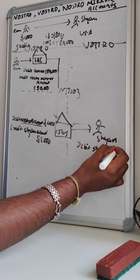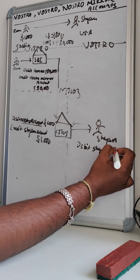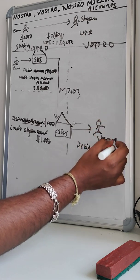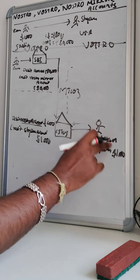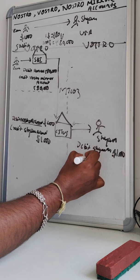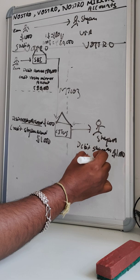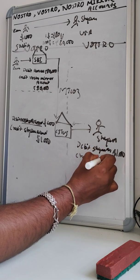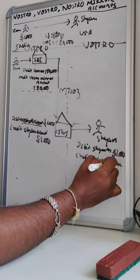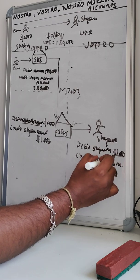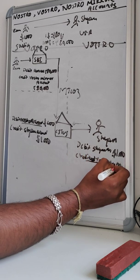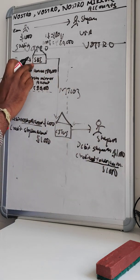Sam's account is debited by one thousand dollars because that is the local currency of Citibank US. Then it is credited to the Nostro account — one thousand dollars. We are not using the Vostro term here because this is credited to the Nostro account. That Nostro account is actually the Vostro account when viewed from SBI's perspective.